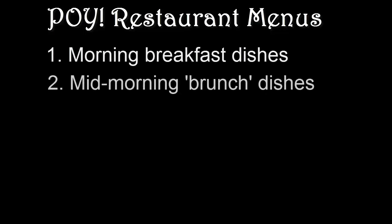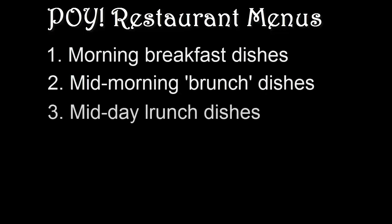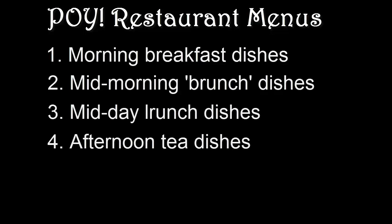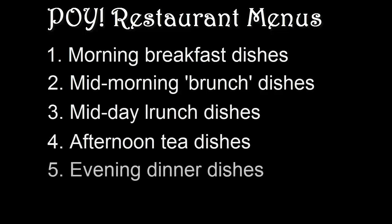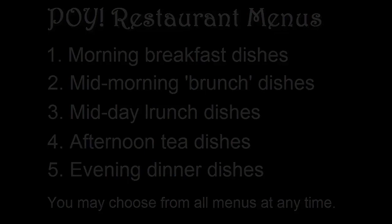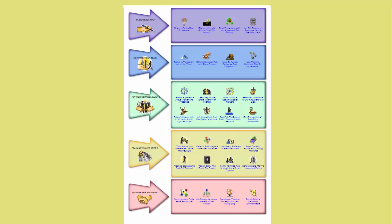mid-morning brunch dishes, mid-day lunch dishes, afternoon tea dishes, and evening supper or dinner dishes. Of course, customers may choose from any of the five sections according to their need. These five phases correspond generally to a typical progression within church planting.